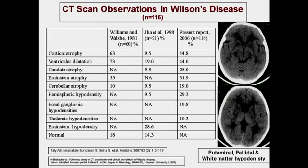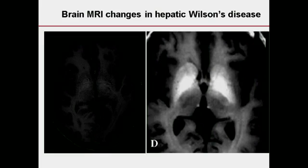When we look at CT scans, they have a limited role in Wilson's disease. Nevertheless, many patients with neurological involvement undergo CT scan and we can find some degree of atrophy or hypodensities mainly restricted to the basal ganglia region.